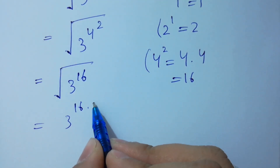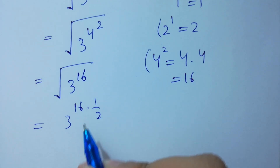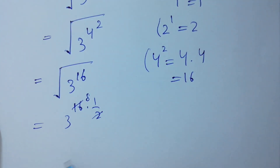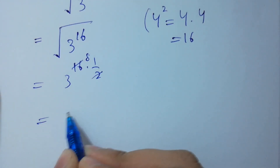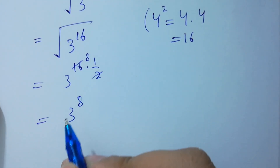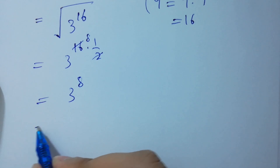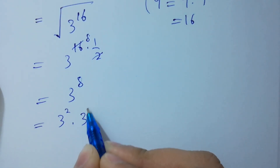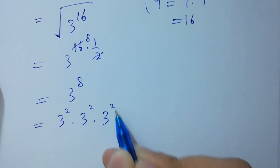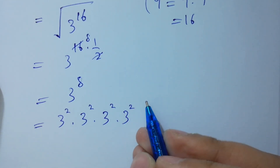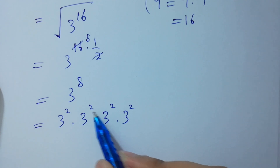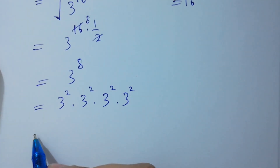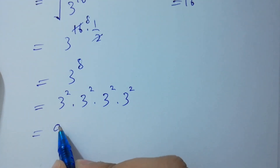The scale root is 1 over 2, and 2 times 8 is 16. We have 3 to the power 8, which is the same as 3 squared times 3 squared times 3 squared times 3 squared — since 2 plus 2 is 4, 4 plus 2 is 6, and 6 plus 2 is 8. And 3 squared is 9.